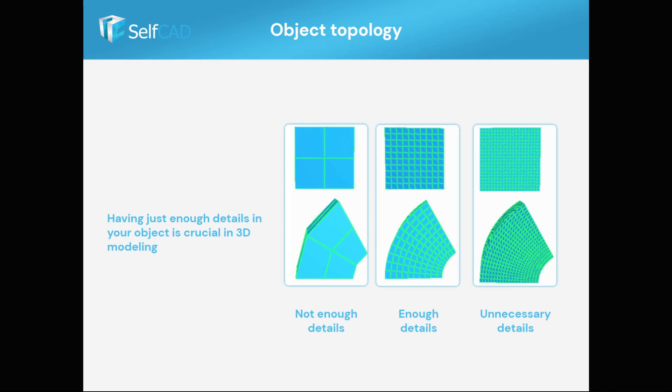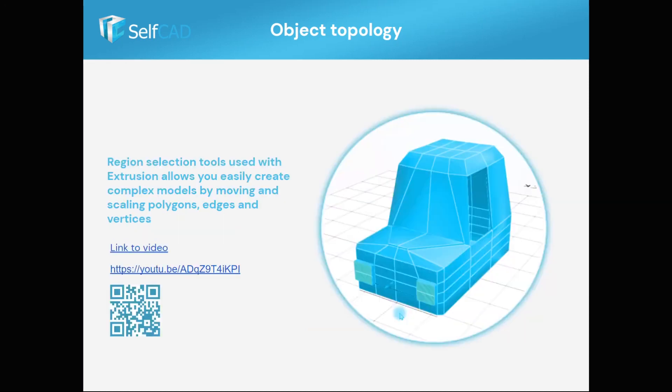In this example, you can see how using the bending tool gives different results based on the object's level of details and how to use the resolution tool to add or remove details as needed.